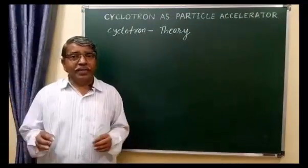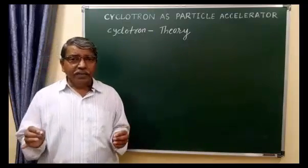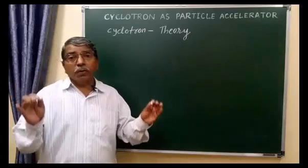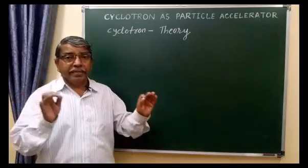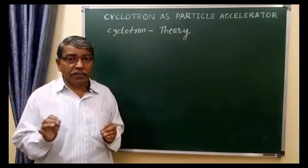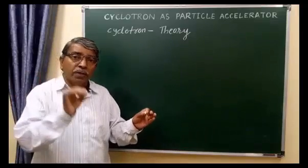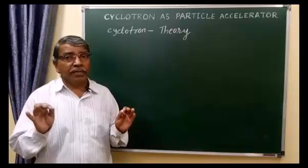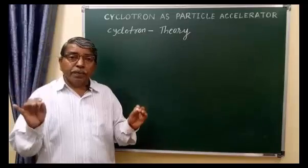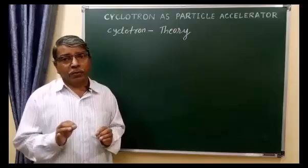That was the working of the cyclotron. Let us move to the theory of the cyclotron, which is very important. In this theory, we will see the expression for: the frequency of revolution of the positive ion inside the cyclotron; the resonance condition for maximum acceleration; the time required to complete the semi-circular path as well as the time period of the positive ion inside the cyclotron; and finally, the expression for the maximum energy attained by the positive ion inside the cyclotron.